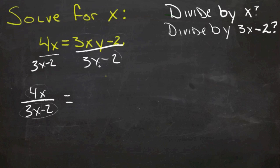And there's nothing common between 3x and negative 2 either, so there's nothing I can factor out here either. So that just leaves this side as 3xy minus 2 over 3x minus 2. Again, I don't think that's getting us where we want to go.